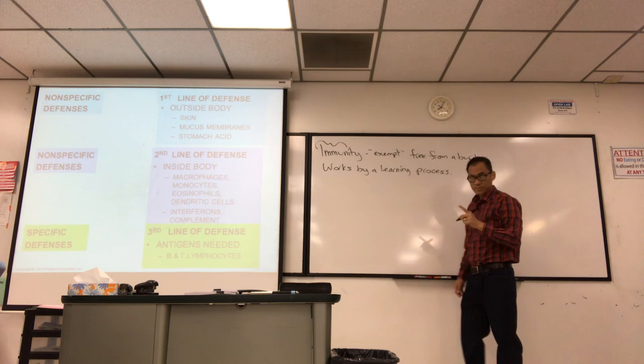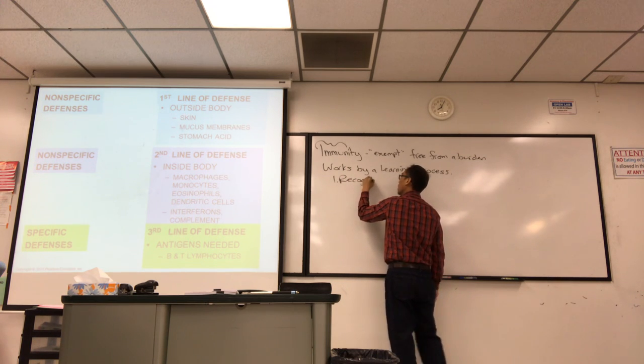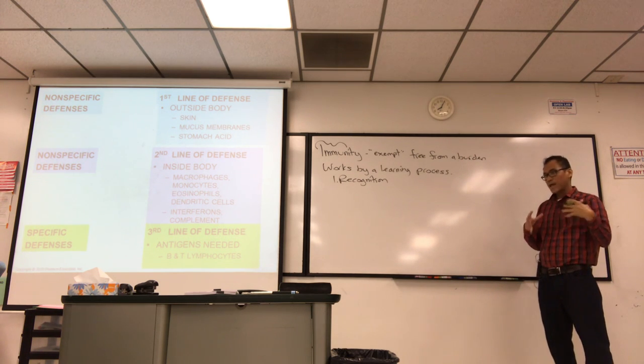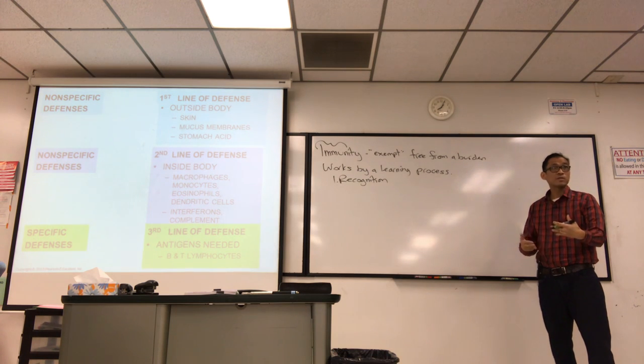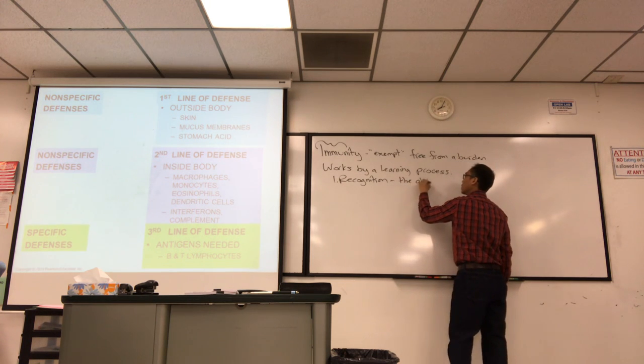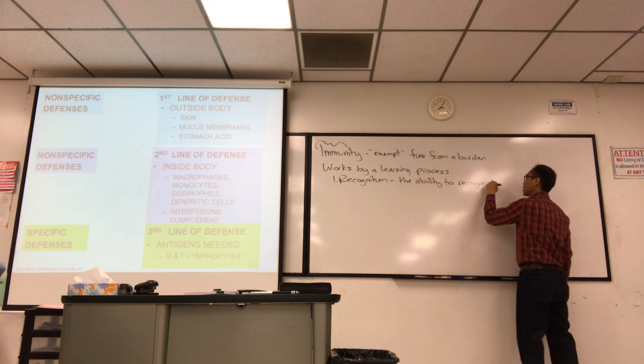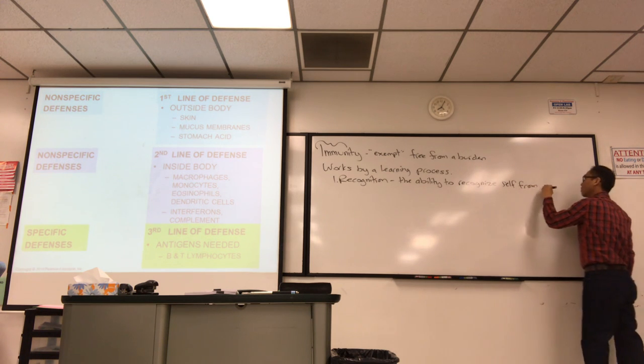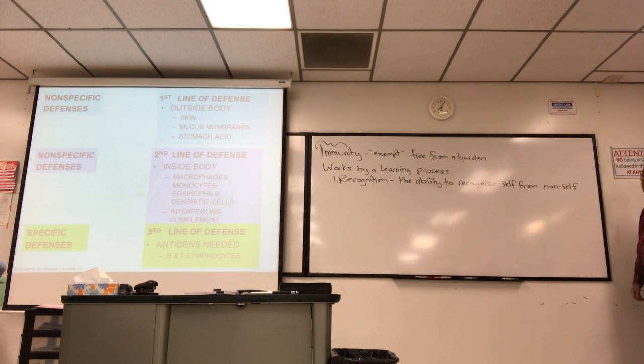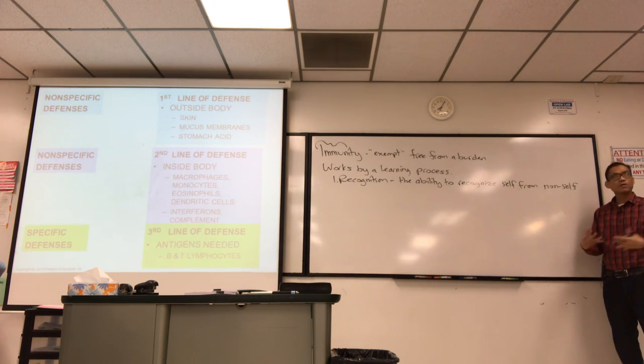It involves two steps. The first step would be recognition. Recognition means your body has to have the ability to recognize any cell or molecule that's non-self versus self, your own cells. If you recognize self as something to attack, that's called an autoimmune disorder.